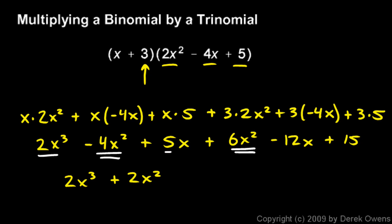And then I have a 5x here and a negative 12x there. Those combine to give me a negative 7x. And then the 15 over here by itself, plus 15.